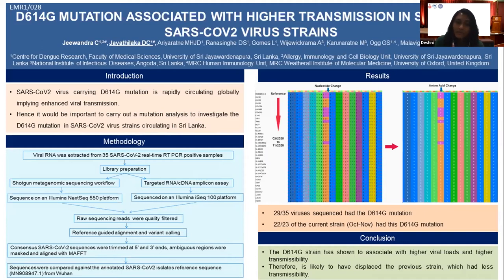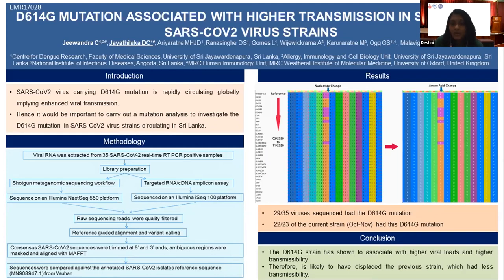We observed that out of 35 virus strains sequenced, 29 had the D614G mutation. Interestingly, out of 23 strains sequenced from the current outbreak, 22 had the mutation. That means from October to November, 22 out of 23 strains carried the D614G mutation.